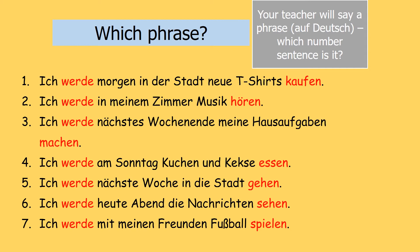Ich werde morgen in der Stadt neue T-Shirts kaufen. Ich werde morgen in der Stadt neue T-Shirts kaufen. This is sentence number one. Ich werde nächste Woche in die Stadt gehen. Ich werde nächste Woche in die Stadt gehen. This is sentence number five.